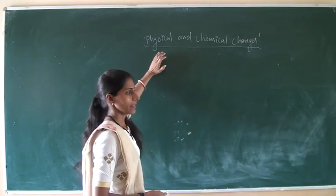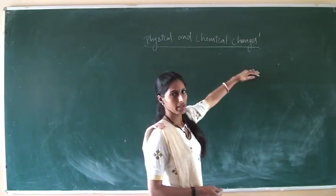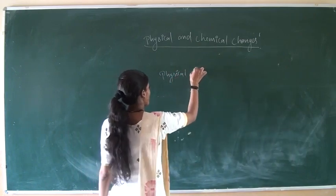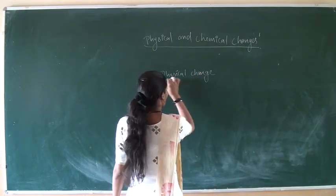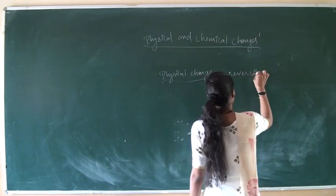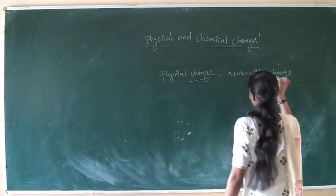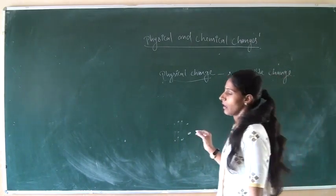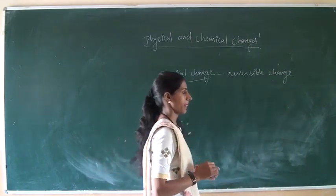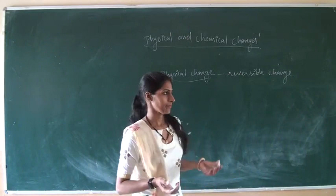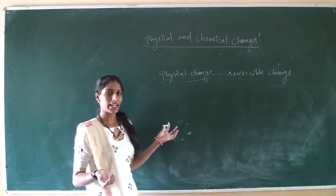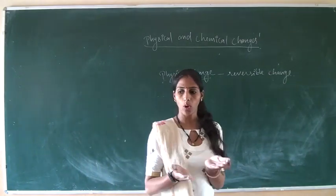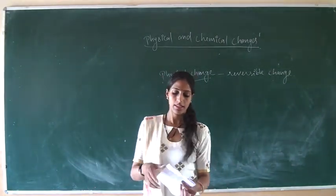These changes are either physical change or chemical change. First, we will discuss about physical change. Physical change is also known as reversible change — a change that can be reversed. For example, when we burn a piece of paper we cannot get it back, but when we fold a piece of paper two or three layers, just like this paper here.